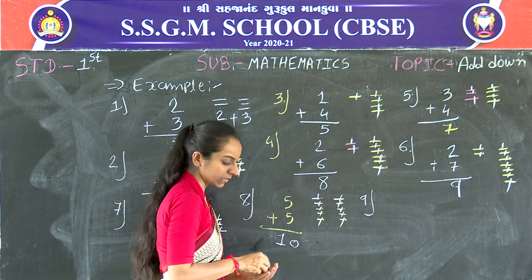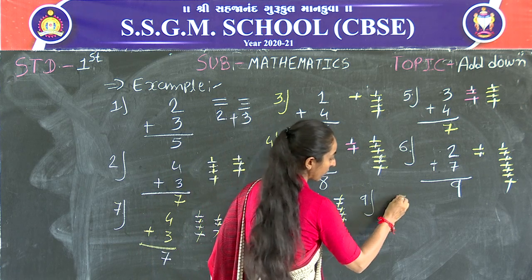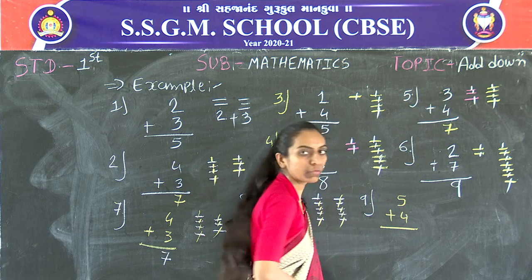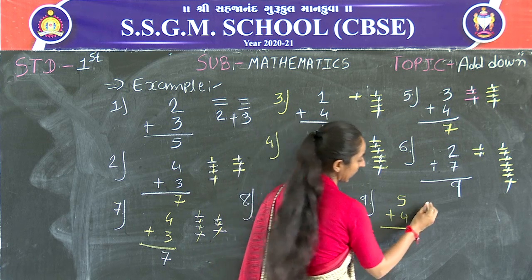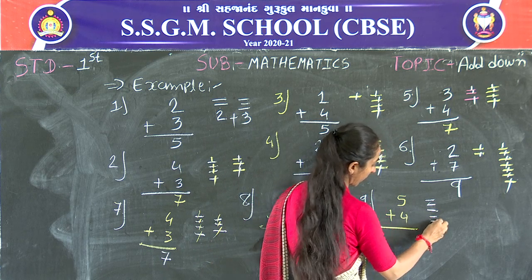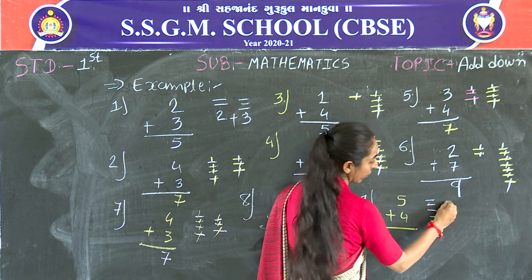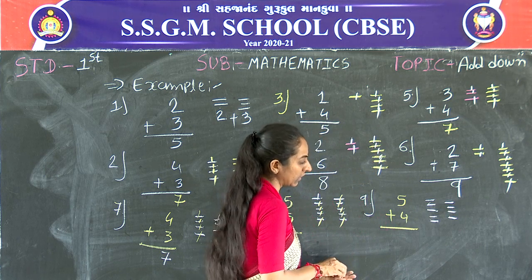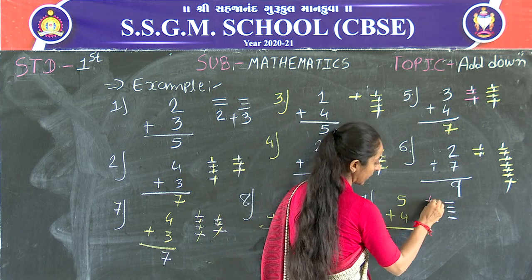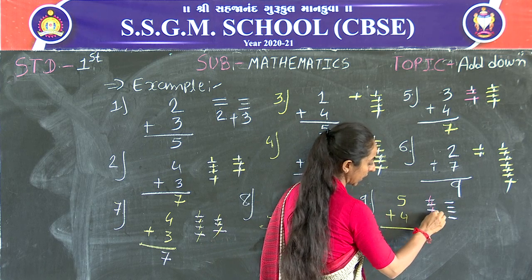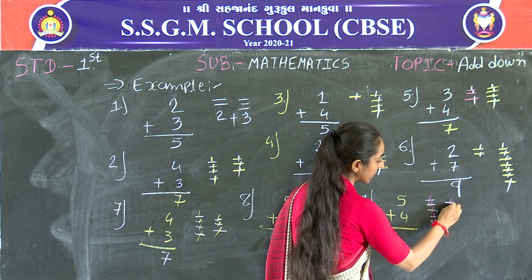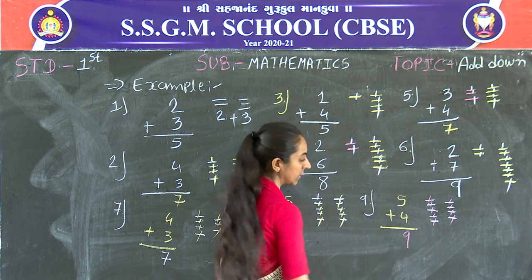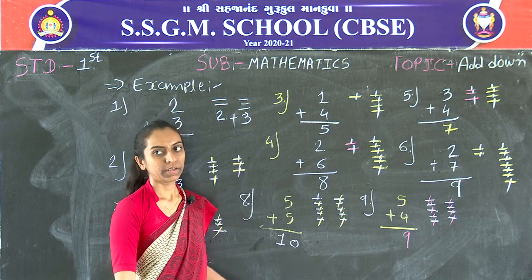Next one is 5 plus 4. Draw 5 lines: 1, 2, 3, 4, 5. Then draw 4 lines: 1, 2, 3, 4. Count all the lines: 1, 2, 3, 4, 5, 6, 7, 8, 9. 5 plus 4 is equal to 9.